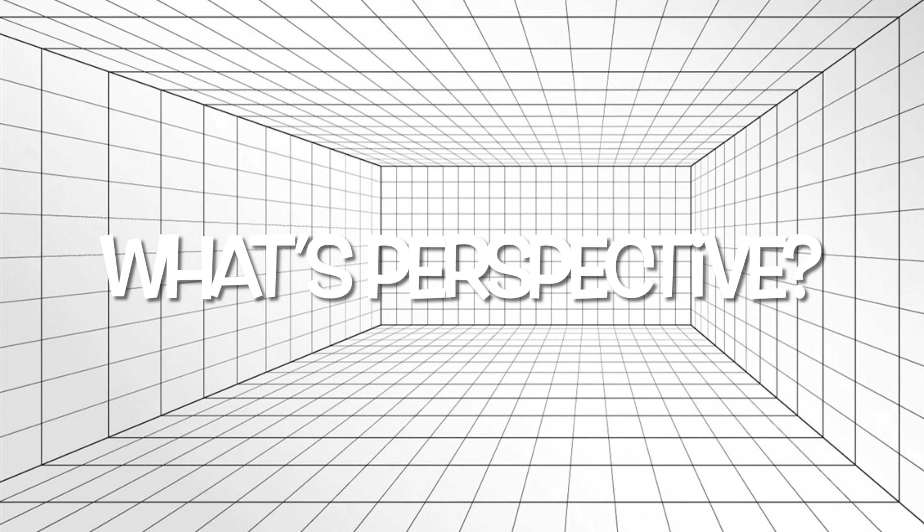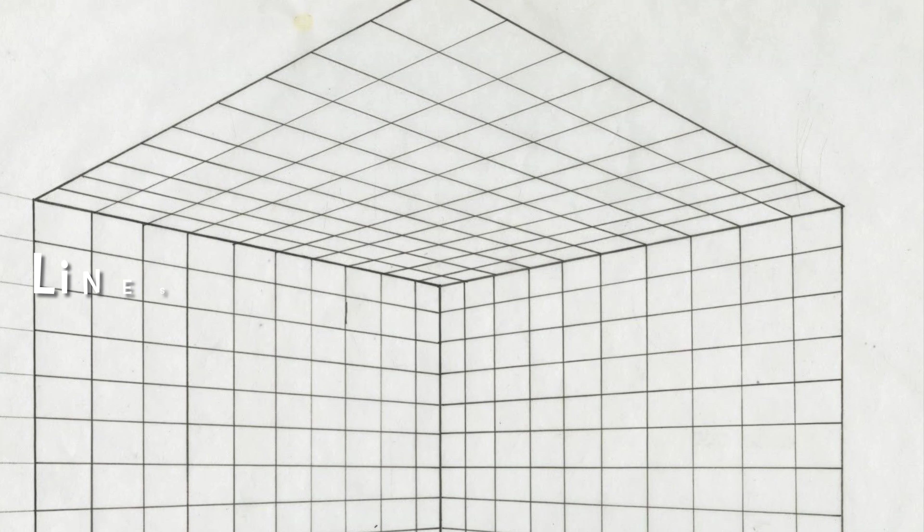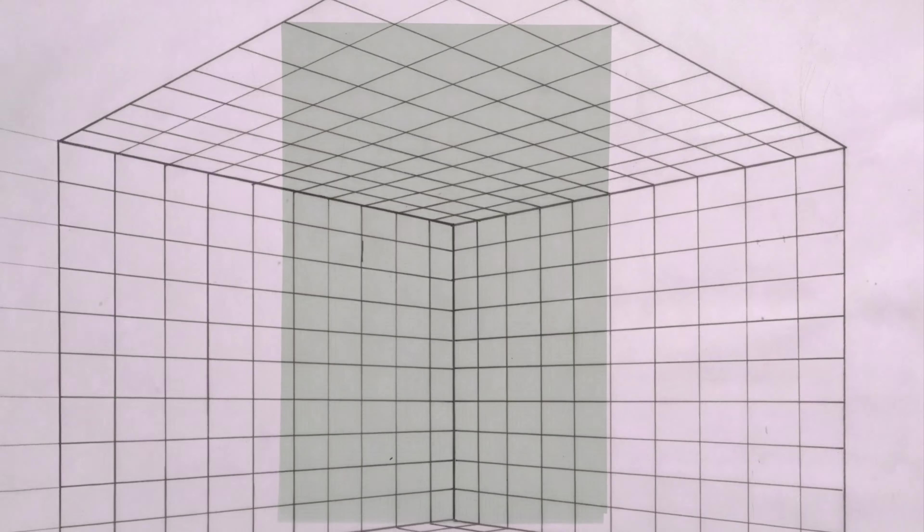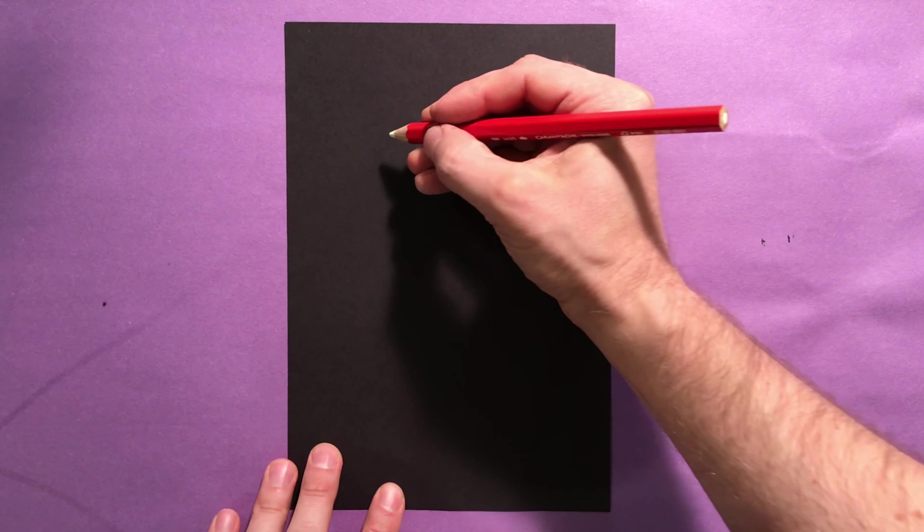First, we're going to have to do a perspective drawing. What is perspective? Well, we're going to draw a bunch of lines to make it look like it's your point of view. To make something look 3D, like it's three-dimensional. Now I'd like to show you a trick how to do that.